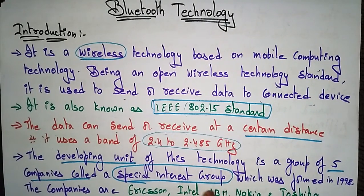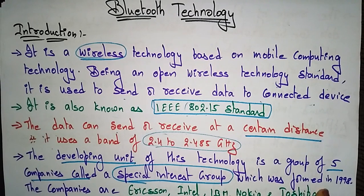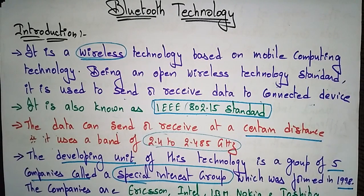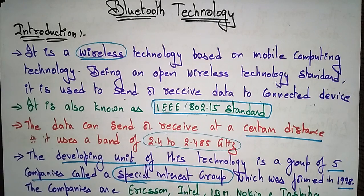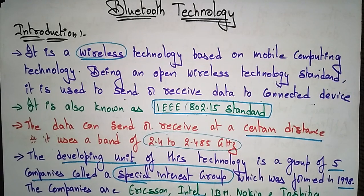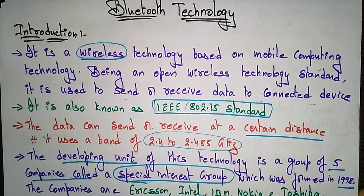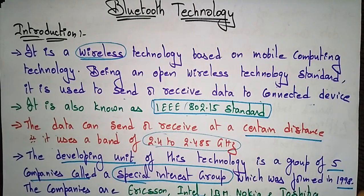The Special Interest Group was formed in 1998. The five companies that formed this group are Ericsson, Intel, IBM, Nokia, and Toshiba. These five companies work together on developing Bluetooth technology.